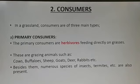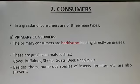Consumers are mainly here of three types. First, we will discuss the primary consumers. Primary consumers are the herbivores which feed directly on the grasses. Cows, buffalo, sheep and goats are the grazing animals or herbivores. A few species of insects are also present.